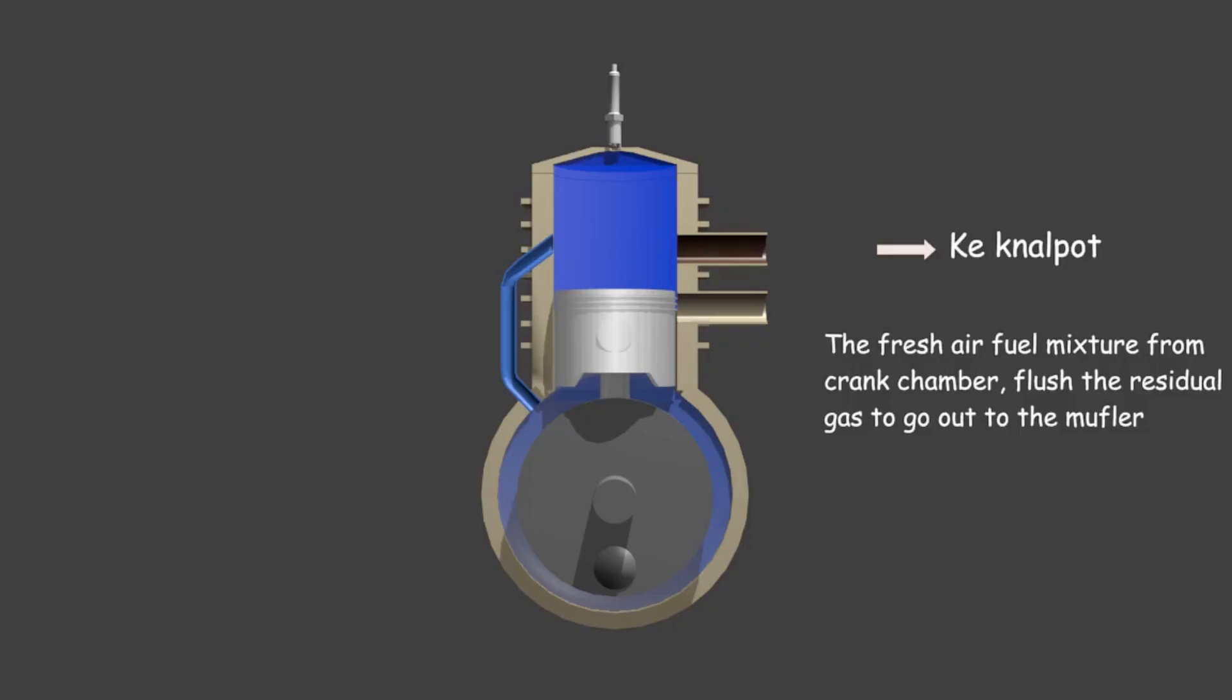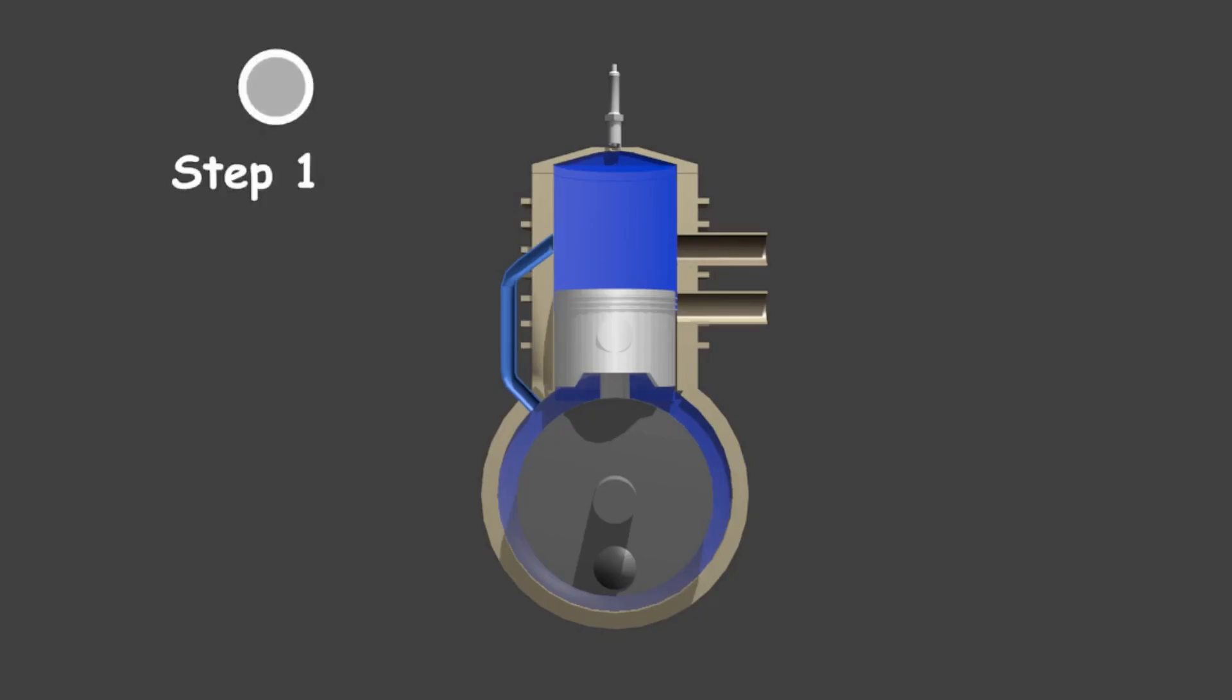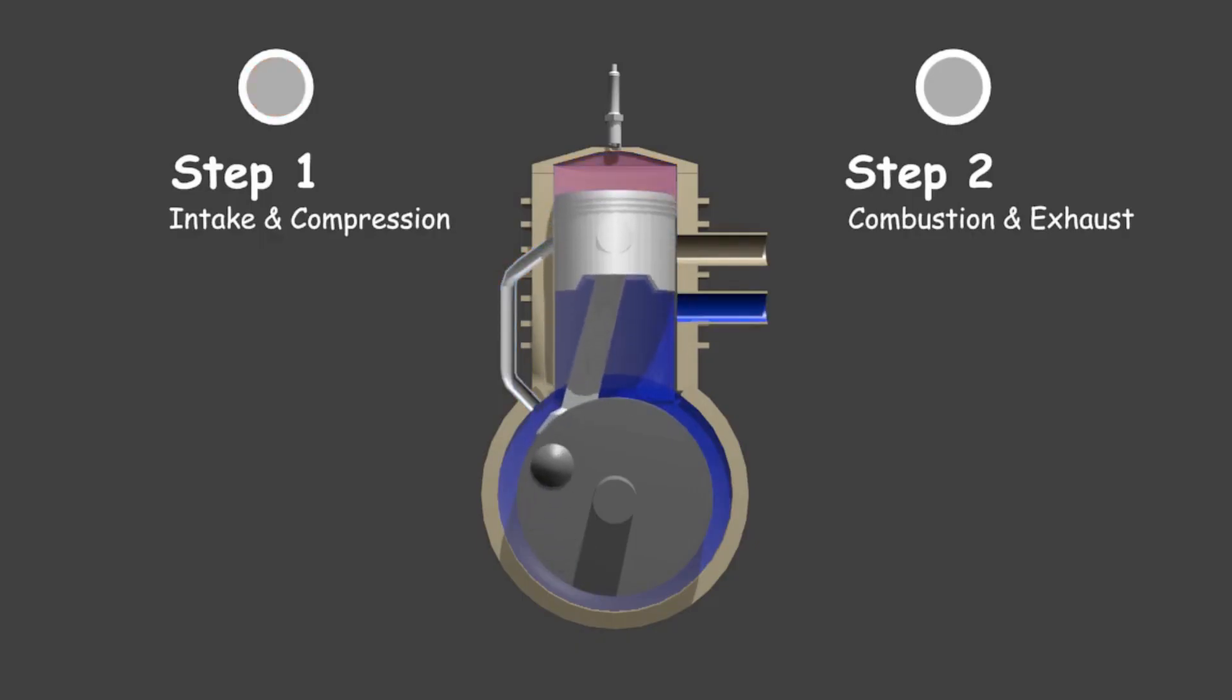When the piston reaches the bottom dead center, the residual gas has flushed out and now the combustion chamber is filled with fresh air-fuel mixture. So the conclusion: the two-stroke engine has only two steps. Each step has two processes. The first step consists of intake and compression processes. Step two consists of combustion and exhaust.